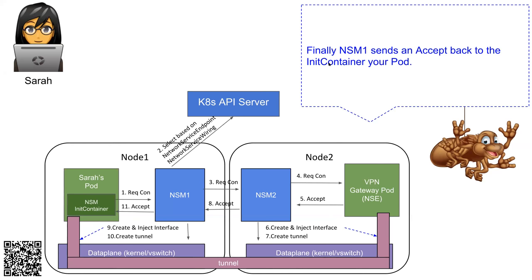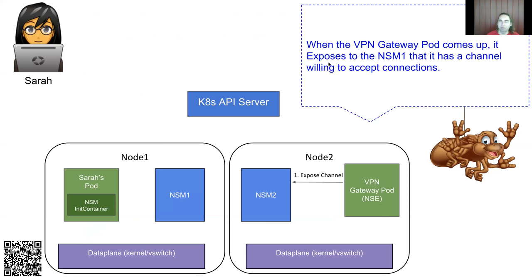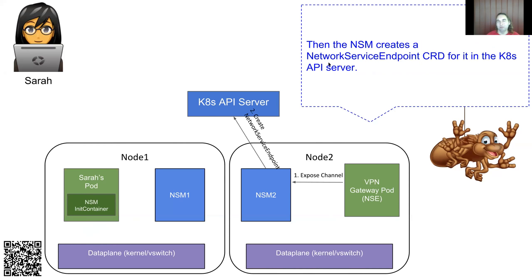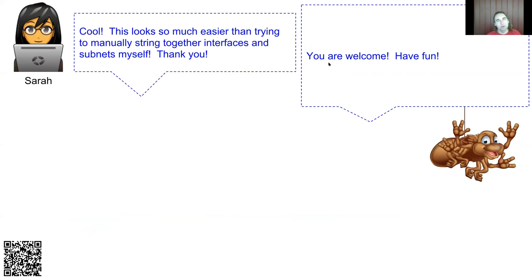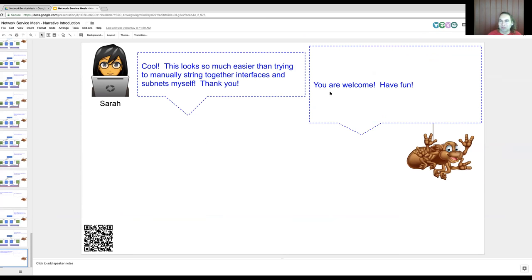How does the Network Service Endpoint resource get into the API server? When the VPN gateway pod comes up, it sends a gRPC to the local Network Service Manager saying it's exposing a channel. The Network Service Manager then creates the Network Service Endpoints in the Kubernetes API server so they're present to be discovered by NSM when the time comes.